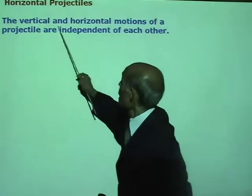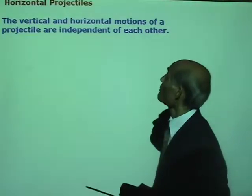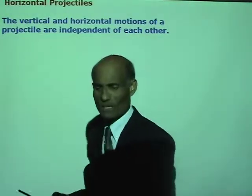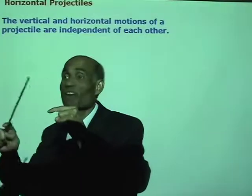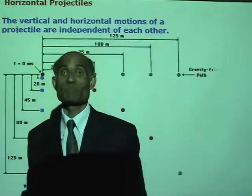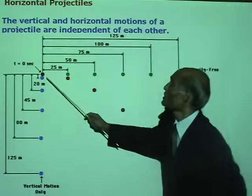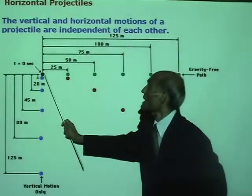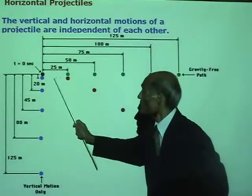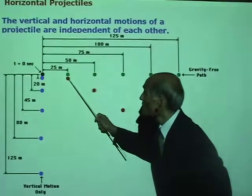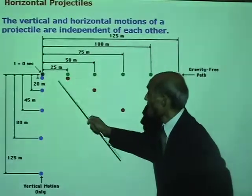The combination of vertical and horizontal travel gives the projectile this curved path. The horizontal motion is not affected and remains constant, while the vertical speed keeps increasing downward because of the force of gravity. The velocity in the horizontal direction remains the same, while the velocity in the downward direction increases as though the horizontal motion does not exist.